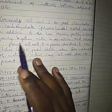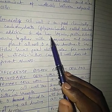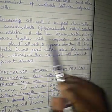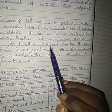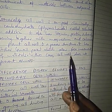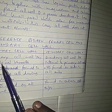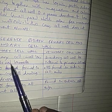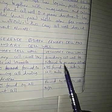Generally, cell wall is composed chemically of carbohydrates — polysaccharides called cellulose. In addition, it has lignin, pectin, and suberin joined together with magnesium and calcium. The plant cell wall is a polar substance and has pits which are small pores allowing free movement of material, so the cell wall does not prevent osmosis. The secondary cell wall lies internal to the primary cell wall.